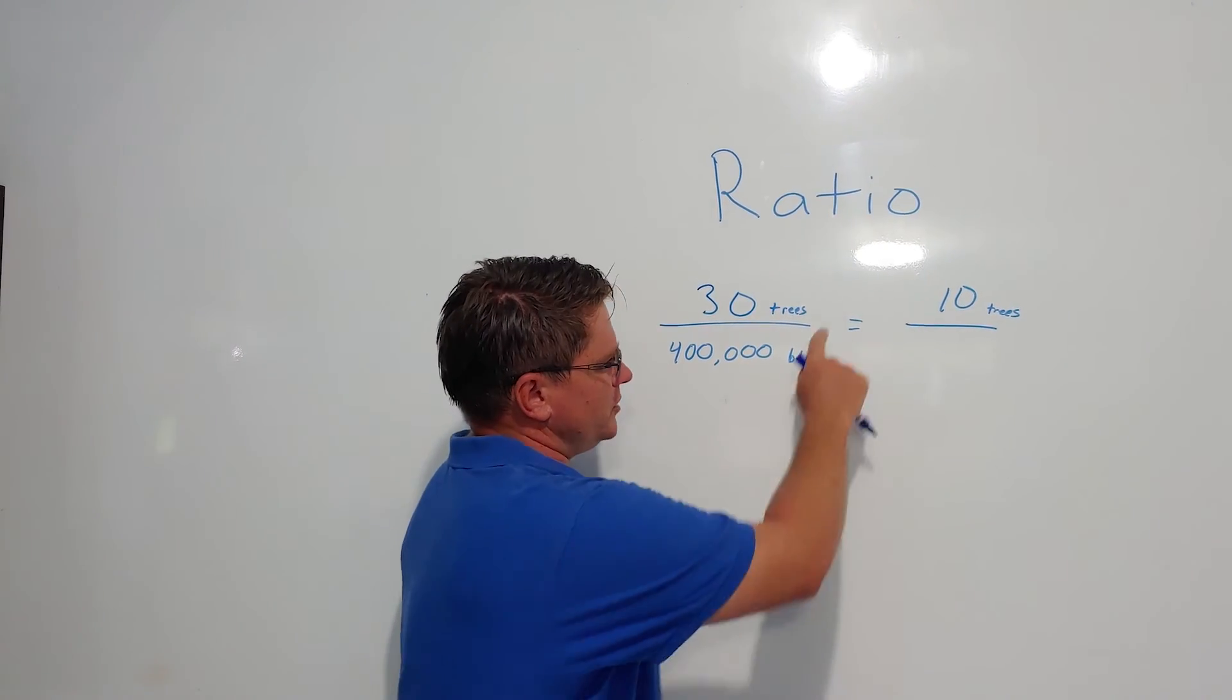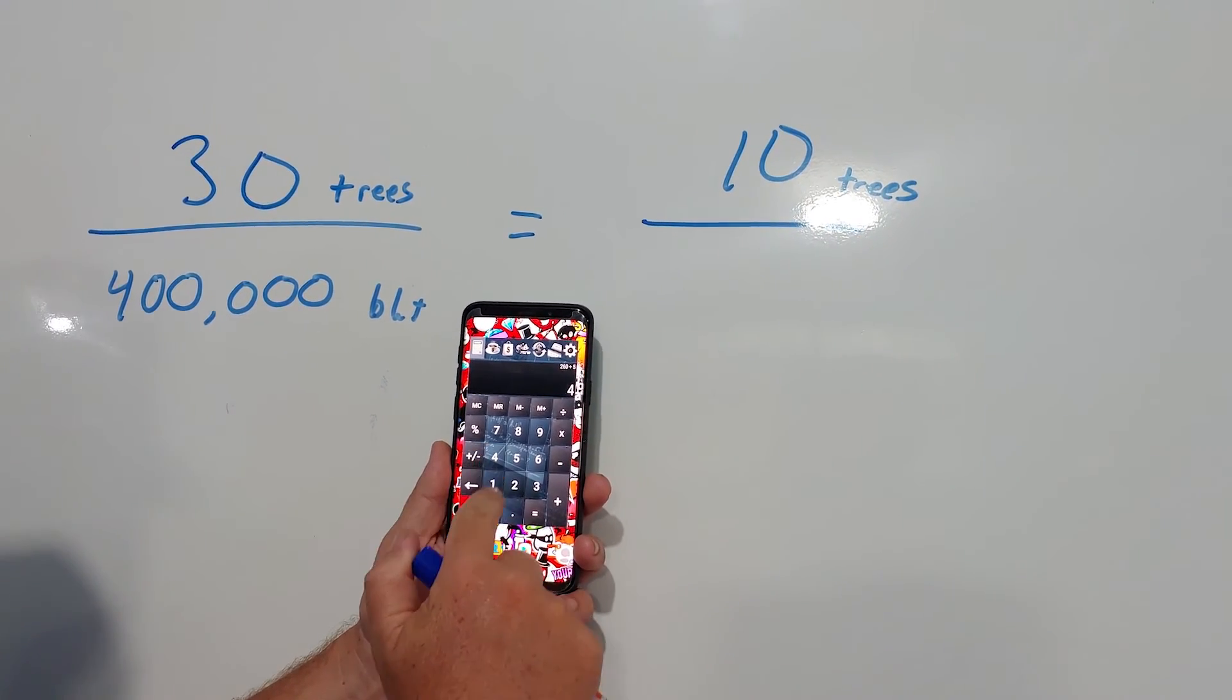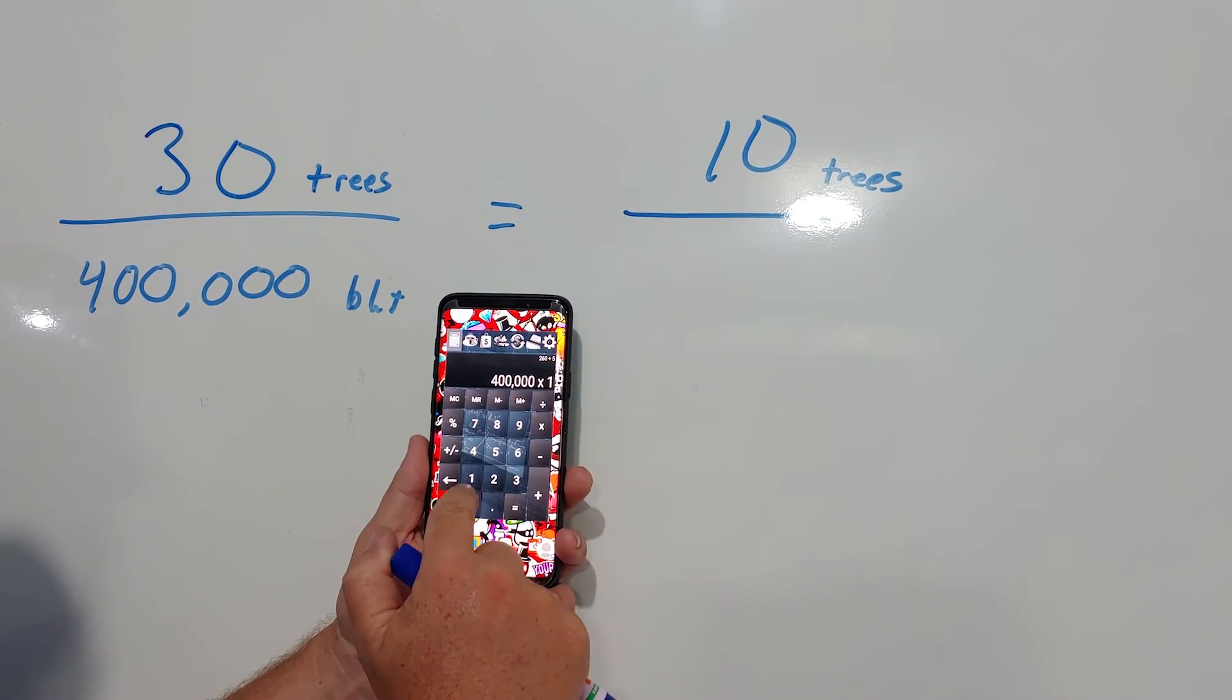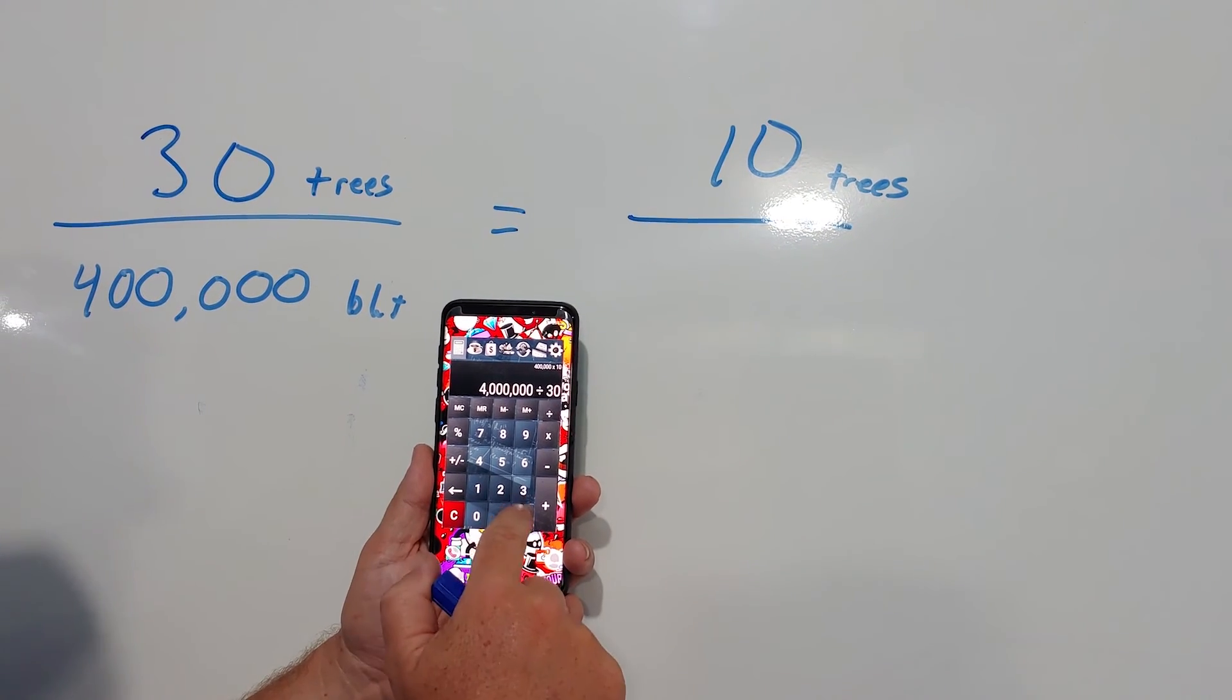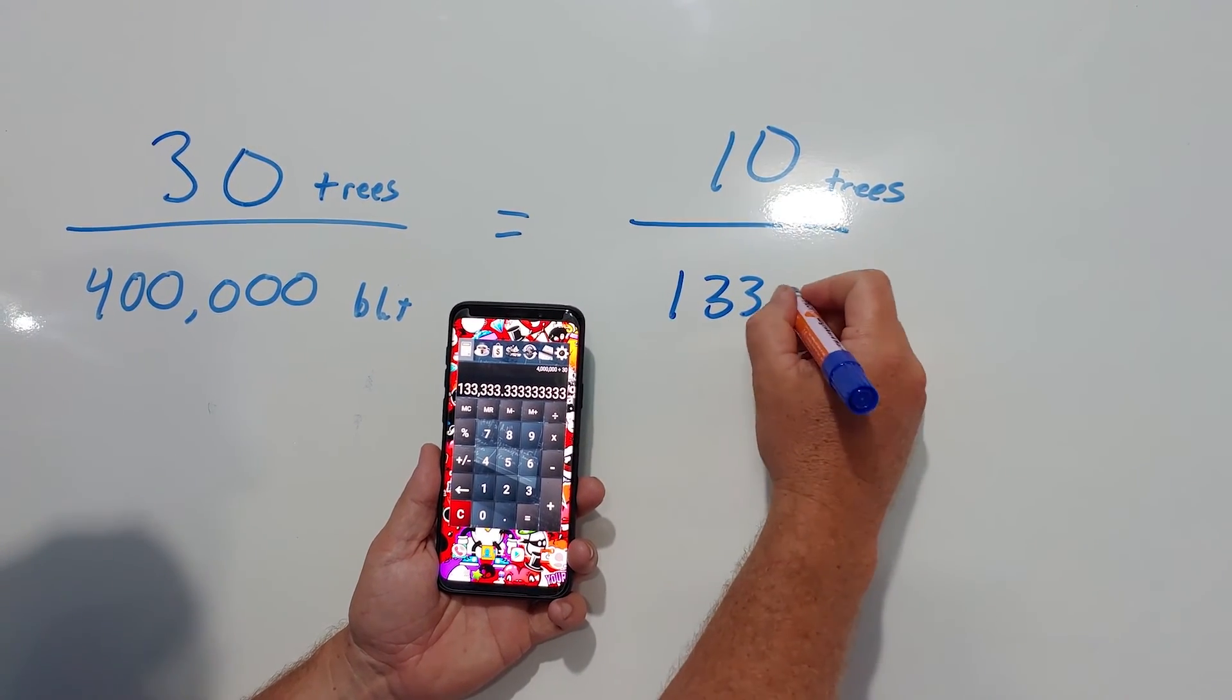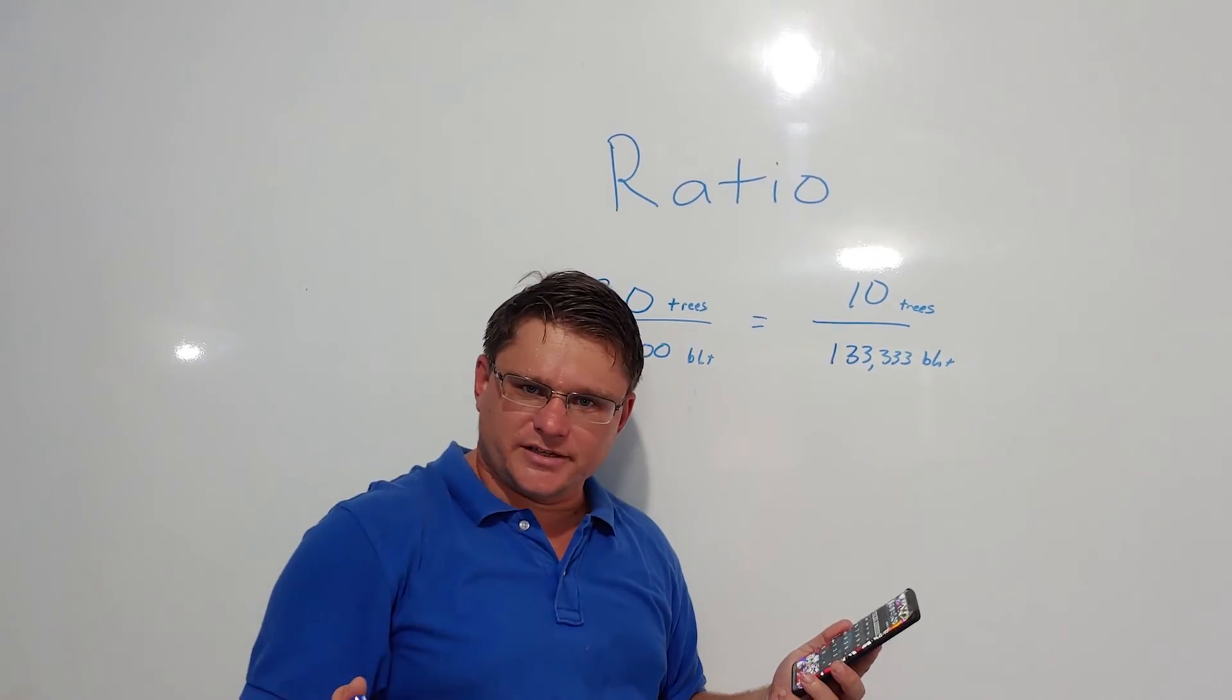Alright, calculator time. You have 400,000 baht times 10 trees divided by 30 equals 133,333 baht. So you see how that works?